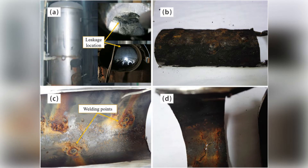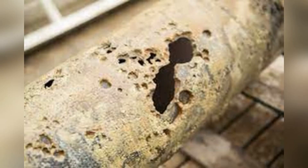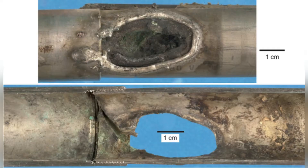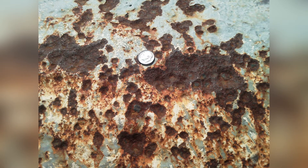In a corrosive environment, metal may be exposed to not only uniform corrosion but also to various types of local corrosion, including pitting, crevice, intergranular, stress, and galvanic corrosion. In areas where corrosion is a concern, stainless steel products offer value and protection against these threats.